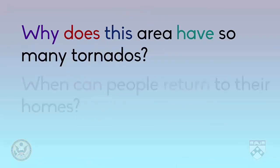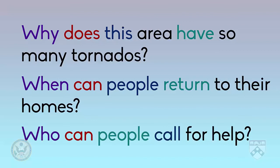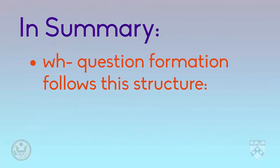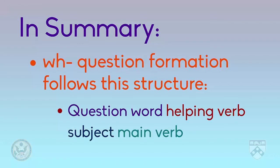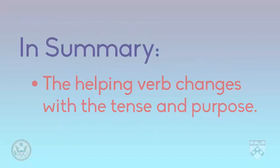Here are some other questions a journalist might ask a government official, such as: 'Why does this area have so many tornadoes?' Notice that in all of these examples, we follow the same formation: question word, helping verb, subject, and main verb. In short, WH question formation follows this structure, and the helping verb changes with the tense and purpose. You can practice these forms when preparing questions for an interview. In the next video, we'll talk about how to select and evaluate interview sources.